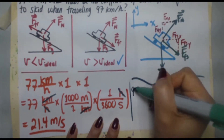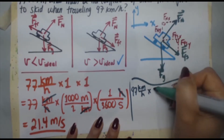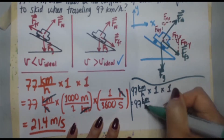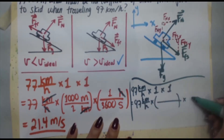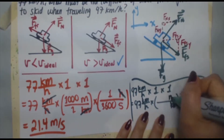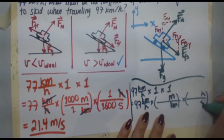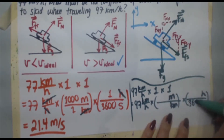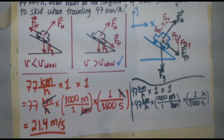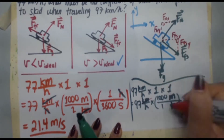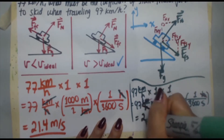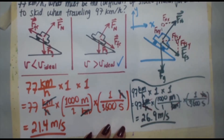Do the same thing for 97 kilometers per hour: 97 × (1000 m / 1 km) × (1 h / 3600 s). Kilometers and hours cancel, giving 97 × 1000 ÷ 3600 = 26.9 meters per second.